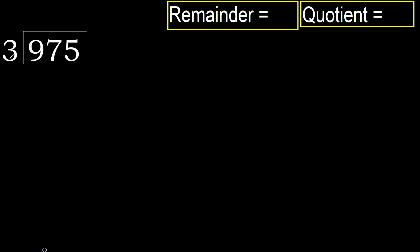975 divided by 3. Starting with 9 — 3 multiplied by which number is nearest to 9 but not greater? 3 multiplied by 4 is 12, which is greater. 3 multiplied by 3 is 9, which is not greater.